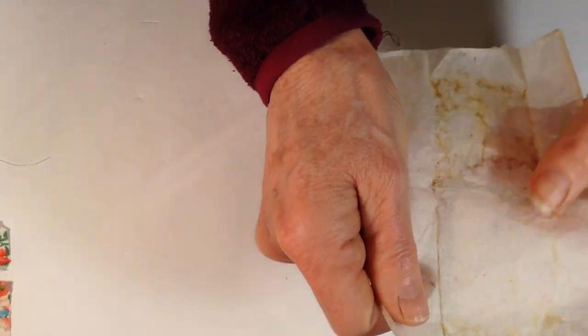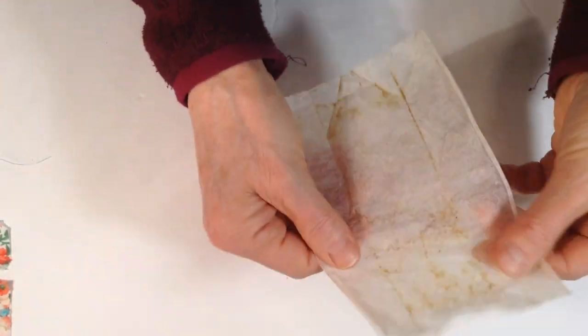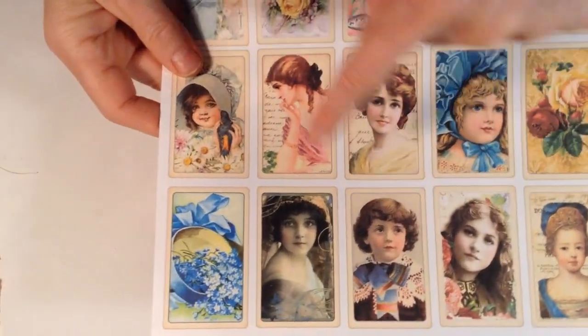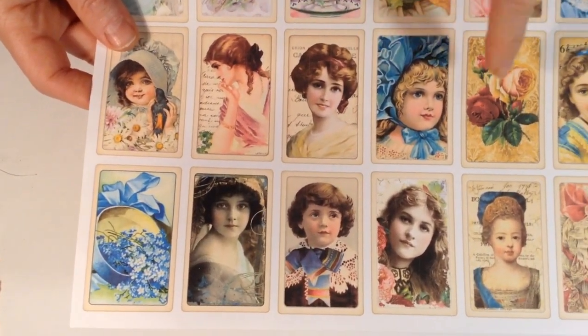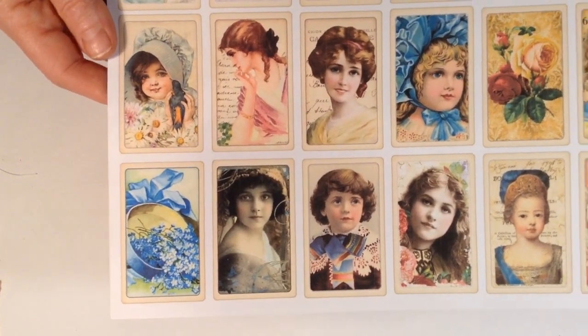There's a lot of tea in there so I'm just gonna dump that out. So now it looks something like this. What I want to do is add I have this printable in my Etsy store. It's this little miniature Victorian children and ladies or figures.